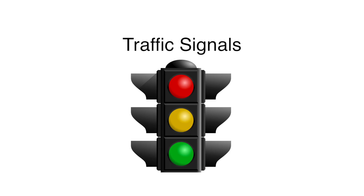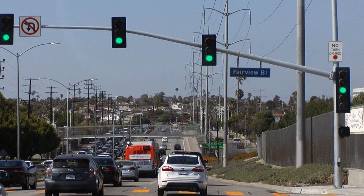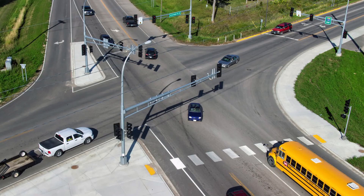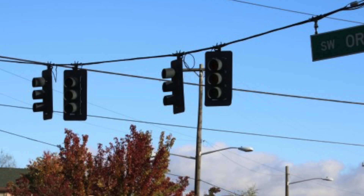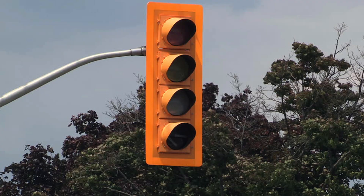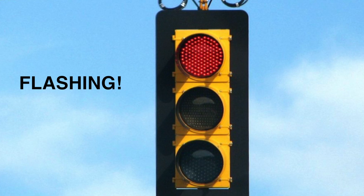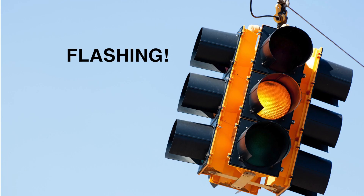Traffic signals control the right-of-way and provide for a smooth, orderly flow of traffic. If a signal appears dark, such as during a power failure, stop as if there are stop signs in all directions. When a traffic signal is out of order and flashes yellow or red, you must obey that signal.